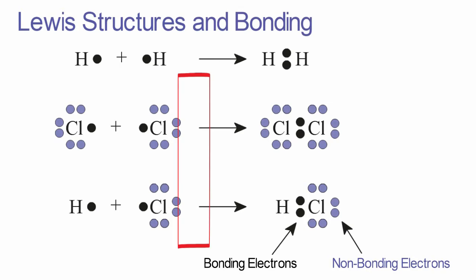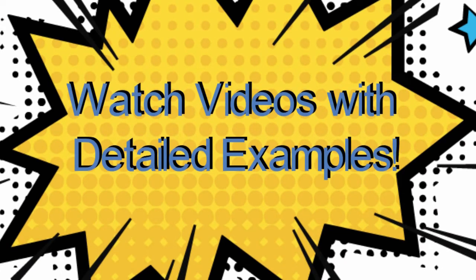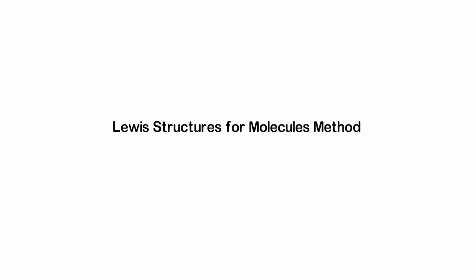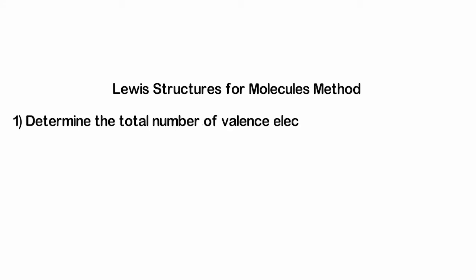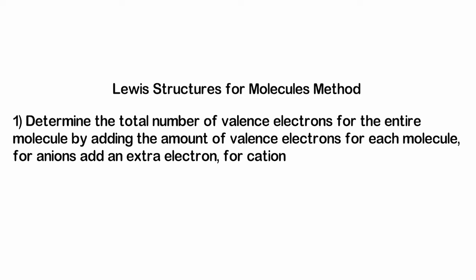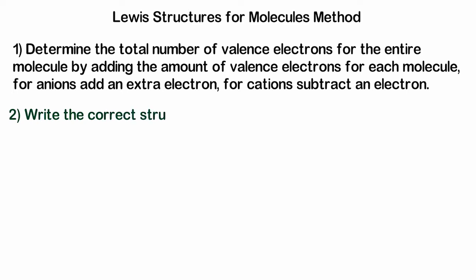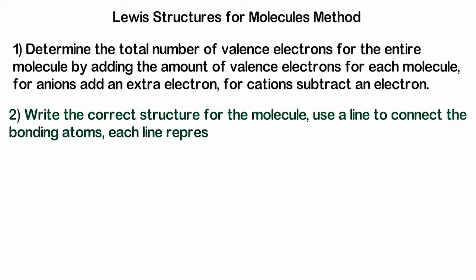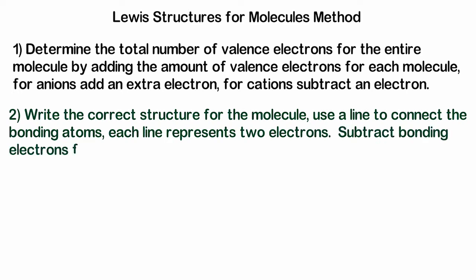The last portion of this video will be dedicated to drawing Lewis structures. We use Lewis structures to demonstrate bonding between atoms, showing how the filling of valence shells by bonded atoms is displayed. There are detailed example videos on drawing Lewis structures to watch after this. The basic method begins with step one: determine the total number of valence electrons for the entire molecule by adding the valence electrons for each atom. For anions, add an extra electron; for cations, subtract an electron. Step two: write the correct structure for the molecule using a line to connect bonding atoms, where each line represents two electrons. Subtract the bonding electrons used from the total.